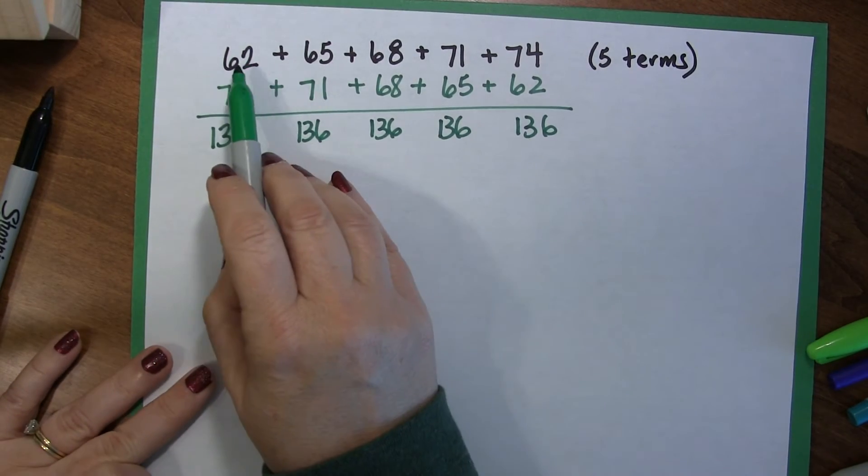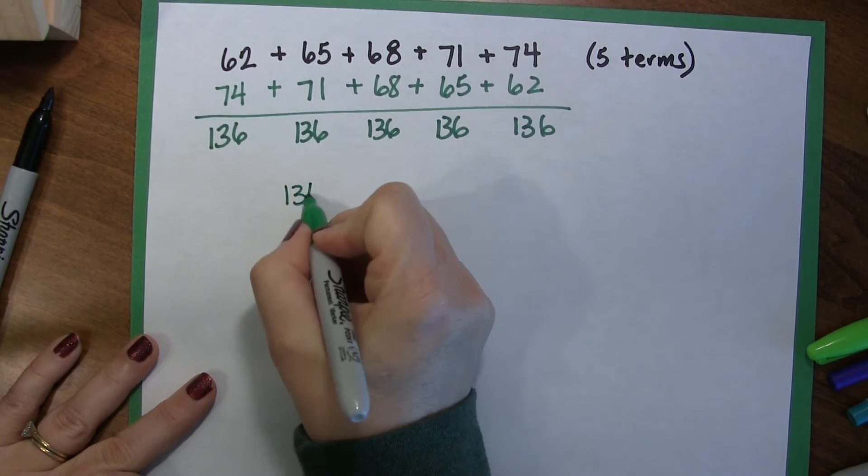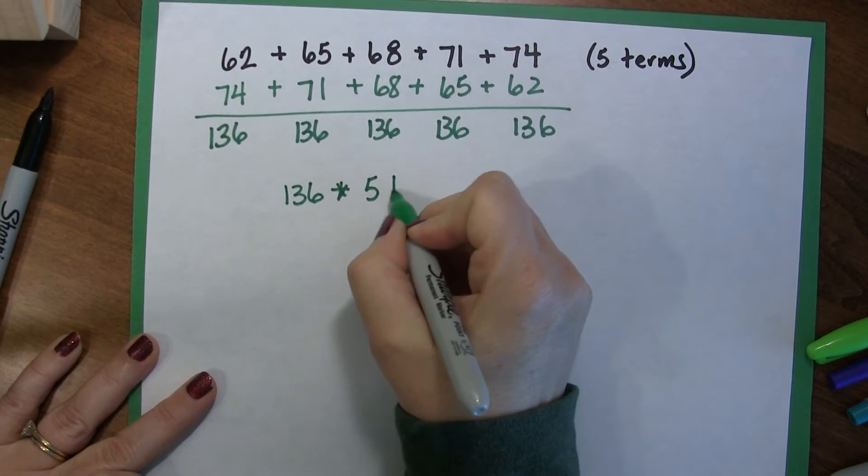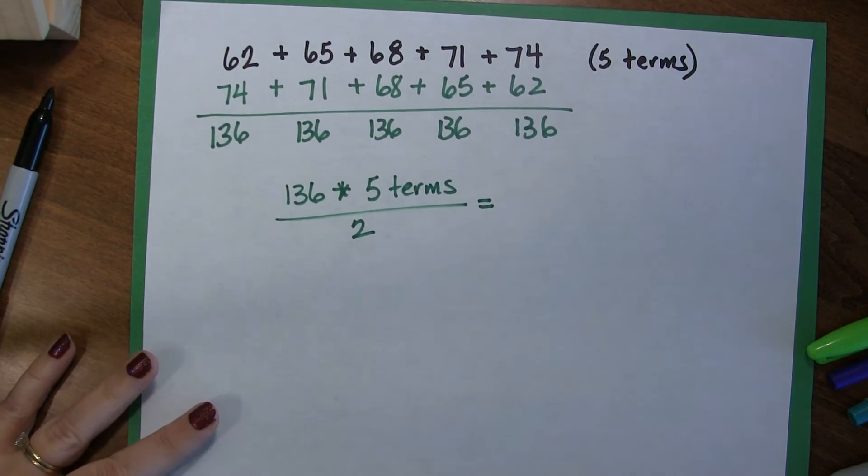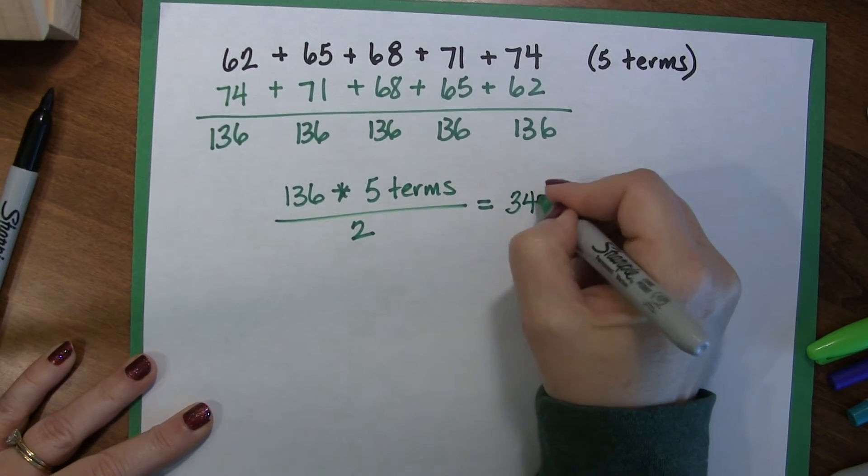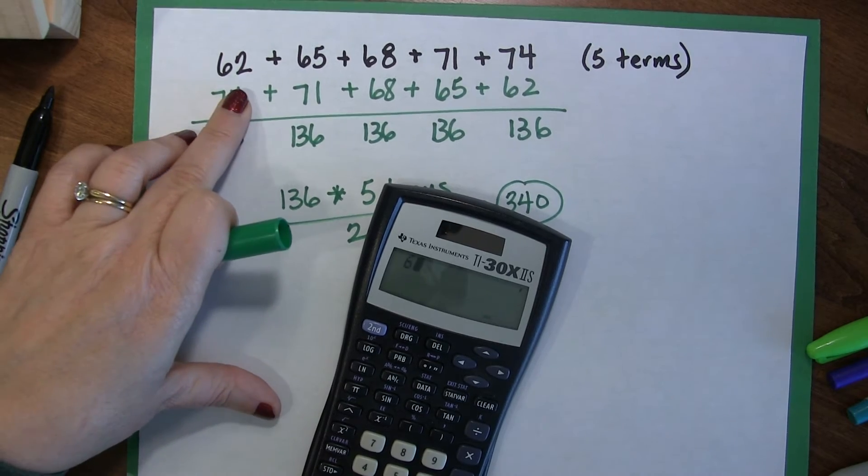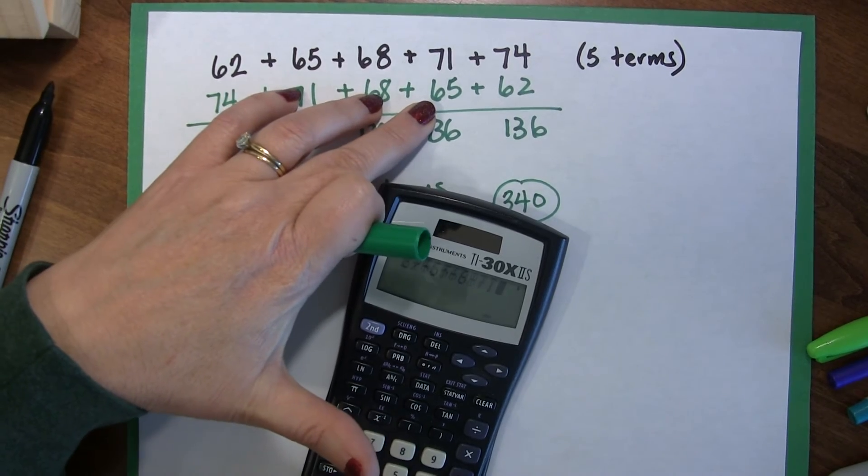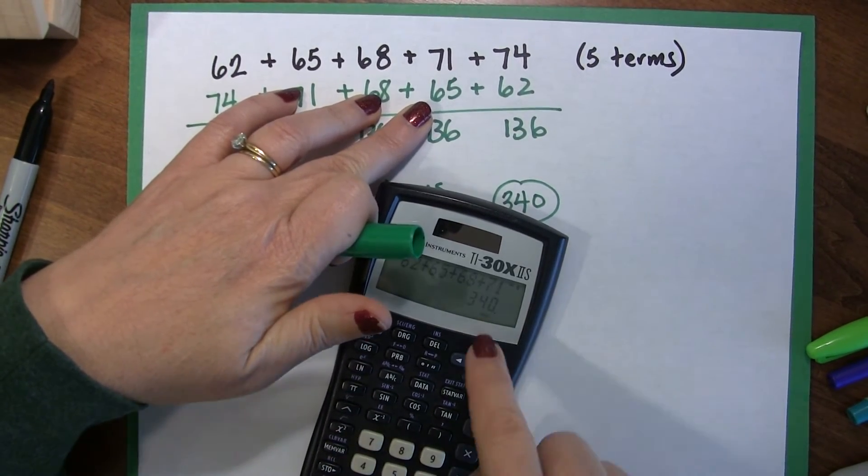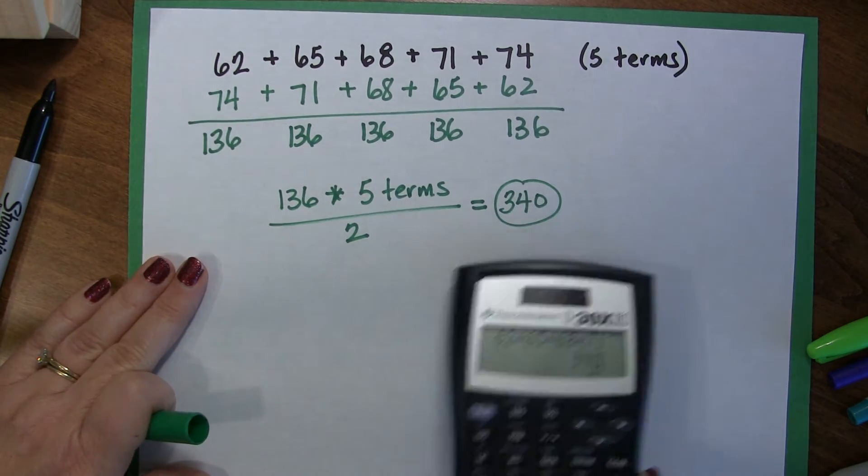So, to calculate what the sum of this black equation is, I'm going to take 136 times 5 terms divided by 2. So, when I whip out my handy dandy calculator, and I do that, I get 340. And sure enough, if you put in your calculator, 62 plus 65 plus 68 plus 71 plus 74, you get 340. Which is exactly what we figured out here.